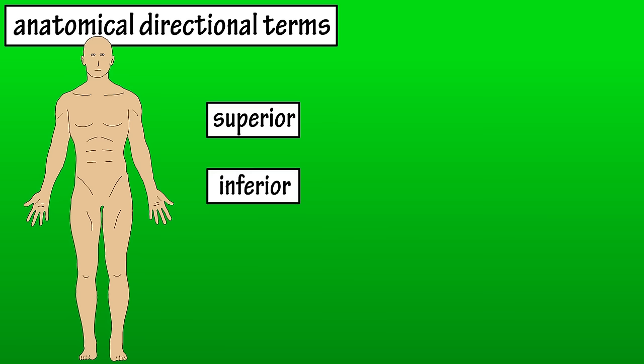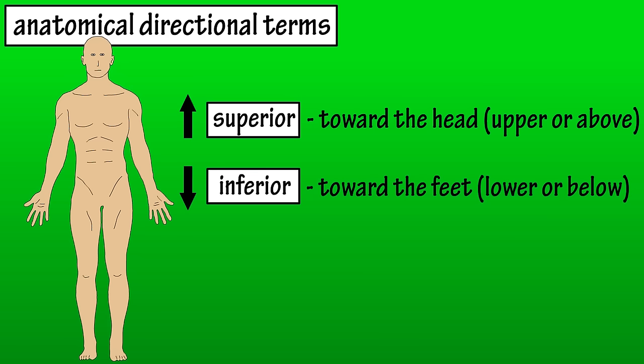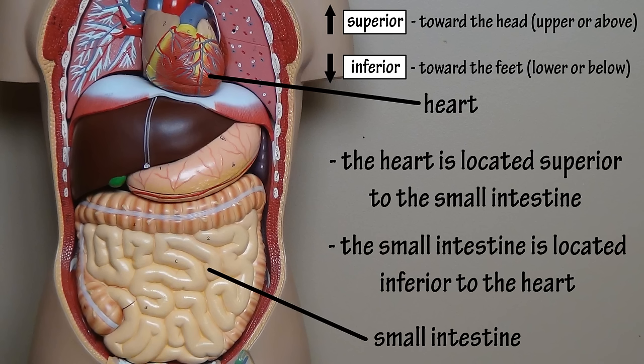We're going to start with superior and inferior. Superior means toward the head, but it can also mean upper or above. Inferior means toward the feet, but it can also mean lower or below. So we would say that the heart is located superior to the small intestine, or we could say the small intestine is located inferior to the heart.